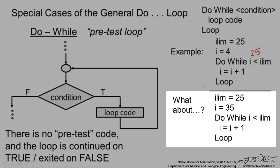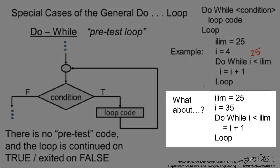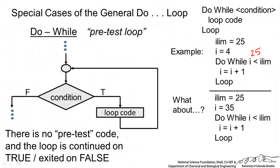What would happen if we set up this loop where we go into the loop with i equals 35? It won't even run once because i will come into this loop as being not less than ilim.